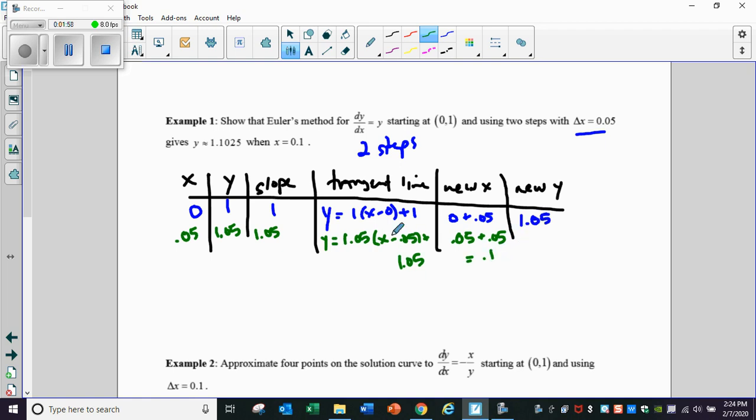The y value I get by plugging in 0.1. 0.1 minus 0.05 is 0.05. Multiply it by the 1.05 and add it to 1.05, and guess what? You get 1.1025, which is exactly what we were setting out to prove it would be.